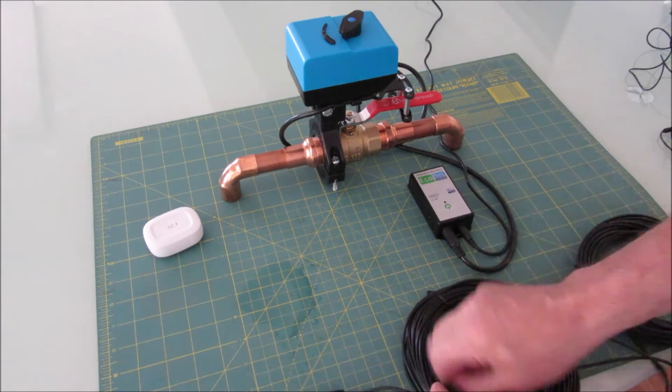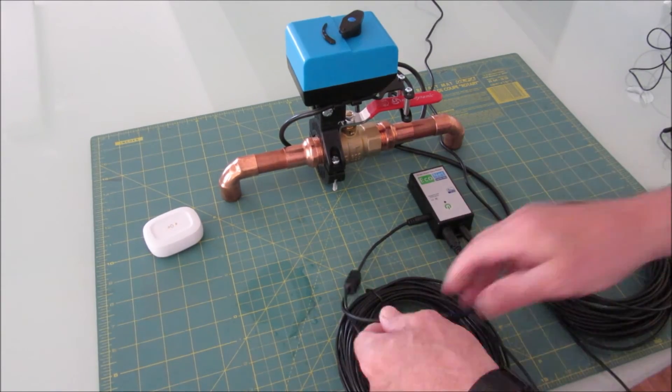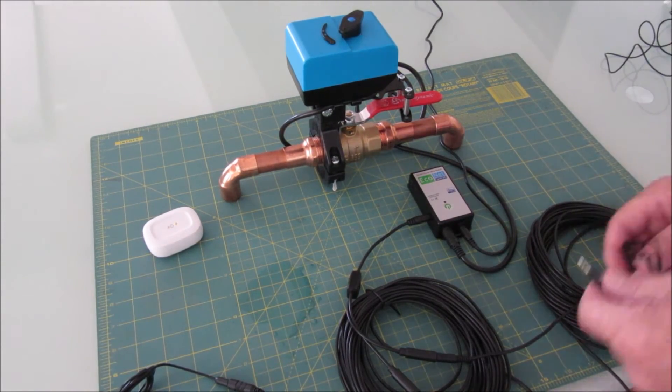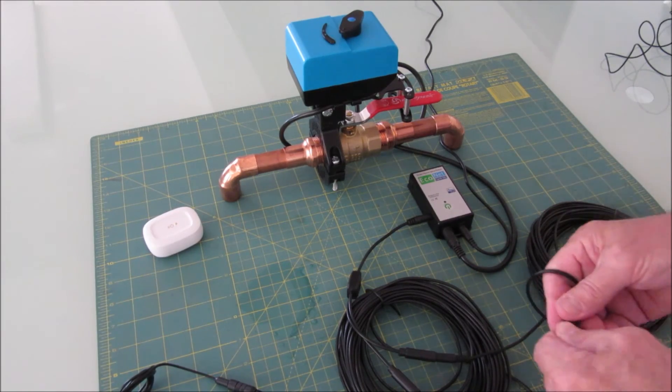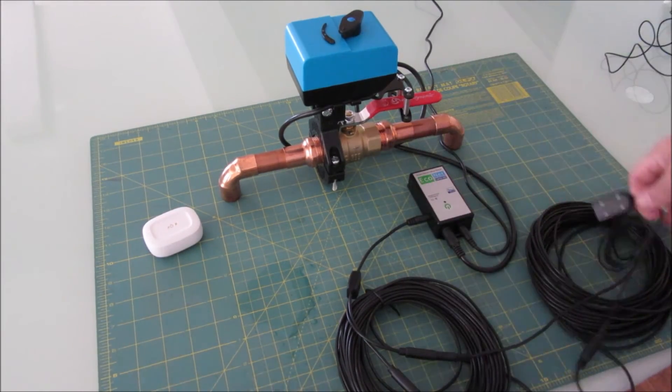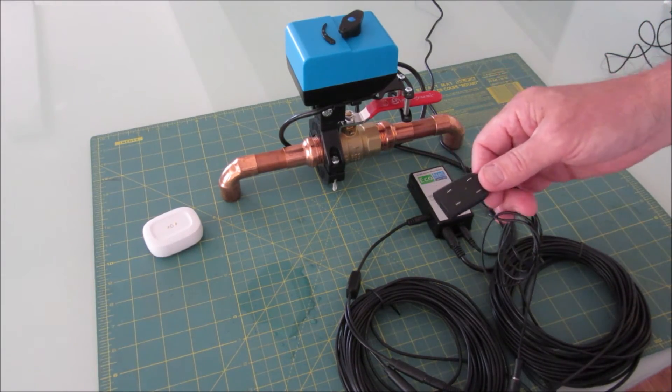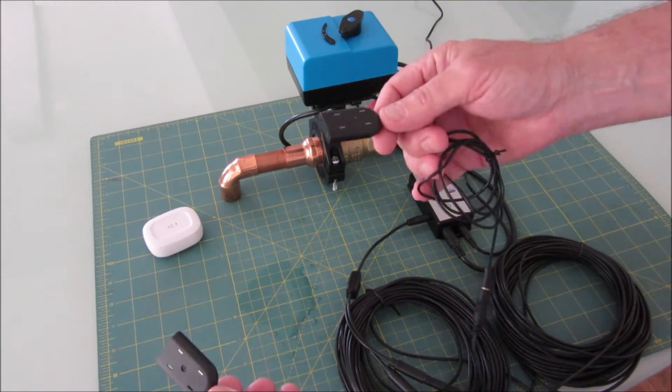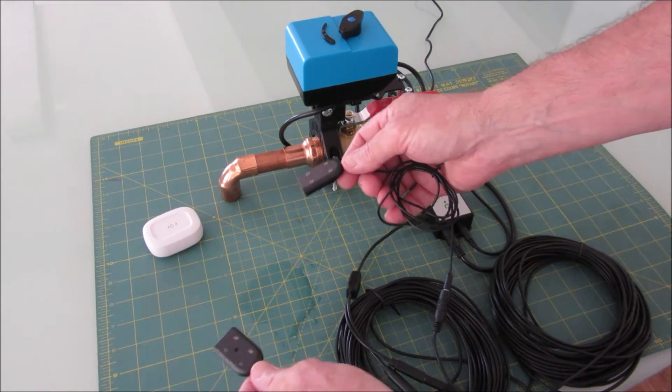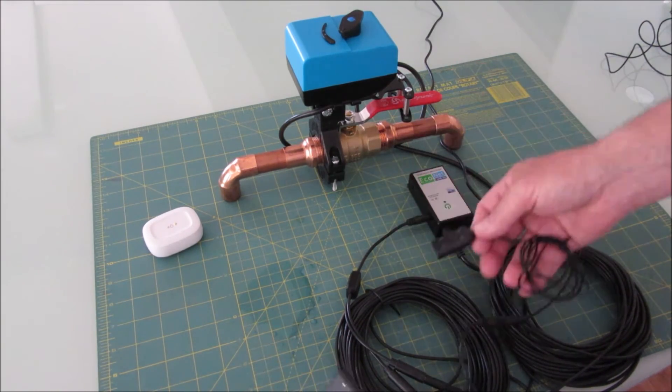And then the second of the two sensors that come in the kit. All right, so now we have two. These happen to be 50-foot cables. I think we only include 10-foot cables in our standard kit, but for demonstration purposes you could spread these two leak sensors around somewhere close to the valve or 50 feet away.